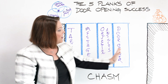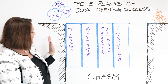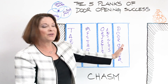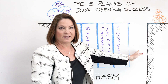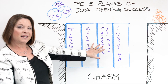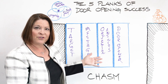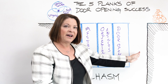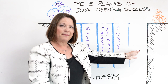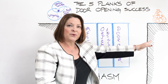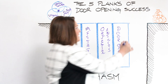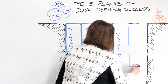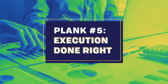So you see here we are on this chasm and the bridge is almost all the way across, but there's one plank that's missing. If somebody were to step on this bridge, it's going to fall in. You need all five planks in order to get optimal results, to get the doors open and to get to those bags of cash. And here is the last plank that we need: the right execution.